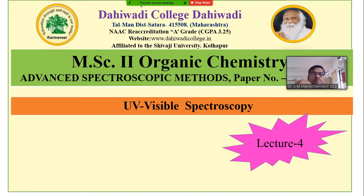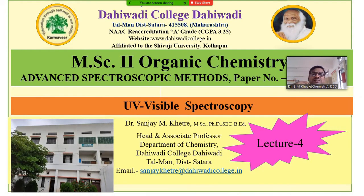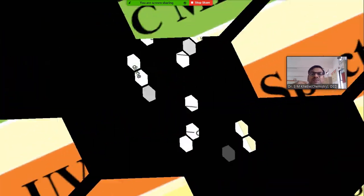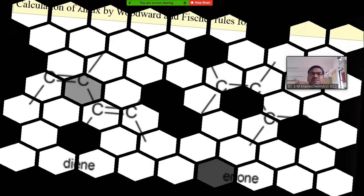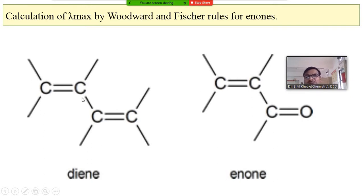This is the fourth presentation of spectroscopic methods, and in this method we are going to look at the Woodward-Fieser rule for the calculation of lambda max for the enone system. Here I have put two examples: one is called the diene system and the other is called the enone system. The first example is diene and the second example is enone.